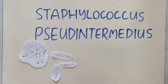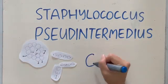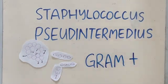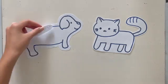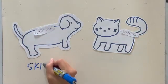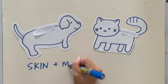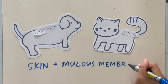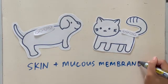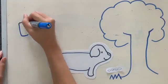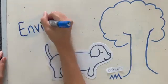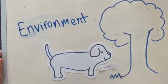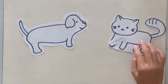Staphylococcus pseudintermedius, staph for short, is a gram-positive cocci bacteria that causes staph infections. Staph is a significant member of the normal flora in most cats and dogs, normally found on the skin and mucous membranes as they like moist areas. They are also found in the environment due to contamination, hence staph can be indirectly transmitted via fomites or directly transmitted by contact.